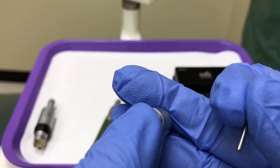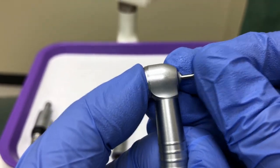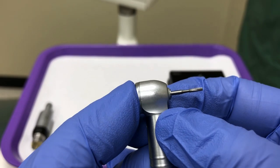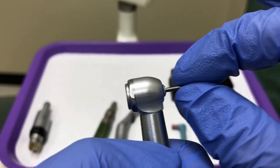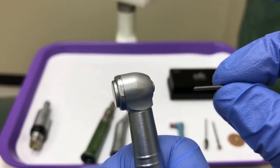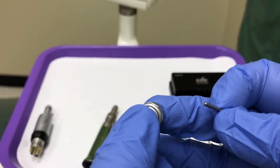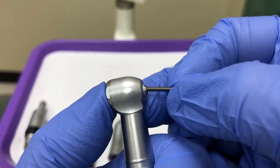This handpiece has a push-button lock. Push firmly on the back of the head and insert the burr. Always tug on the burr to verify that the burr is secure. If it comes out when you test it, it is likely to come out while the doctor is using it, and that can injure the patient. Reinsert the burr.